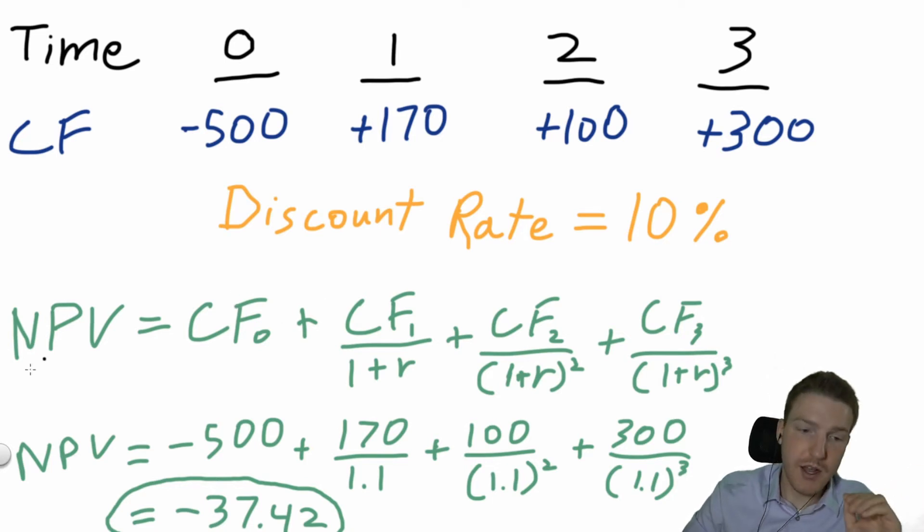Plugging in these numbers: NPV equals -500 plus 170 over 1.1 (that is one plus 10% interest rate) plus 100 over 1.1 squared. In the end, we find out that this business is not worth pursuing because we're going to lose money on the basis of net present value.